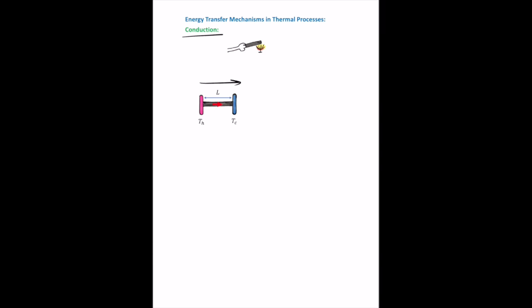At the atomic scale, conduction involves an exchange of kinetic energy between more energetic and less energetic atoms or molecules. The heated atom vibrates with larger amplitudes and collides with neighboring atoms, transferring energy in the process. In metals, free electrons also contribute to conduction — not just bound electrons vibrating about their equilibrium positions — which is why metals are good thermal conductors.